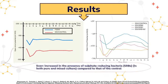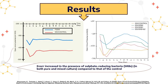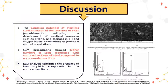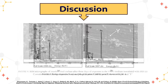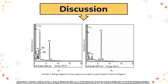The results show that the corrosion potential increased in the presence of sulfate-reducing bacteria compared to the control. No significant changes in OCP were observed in a sterile medium; however, filter-sterilized seawater showed higher corrosion potentials compared to VMNI medium. The corrosion potential of stainless steel increased in the presence of SRBs, indicating the development of localized corrosion such as pitting. Micrographs showed higher numbers of SRBs associated with corroded sections compared to non-corroded sections, and EDX analysis confirmed the presence of iron sulfide compounds in the corroded sections, indicating the influence of SRBs in the corrosion process.